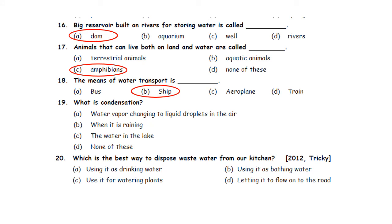Question nineteen: What is condensation? A. Water vapour changing to liquid droplets in the air. B. When it is raining. C. The water in the lake. D. None of these. Condensation means on cooling, the process of converting water vapour into liquid. So the correct option is A — water vapour changing to liquid droplets in the air. So option A is the correct answer.